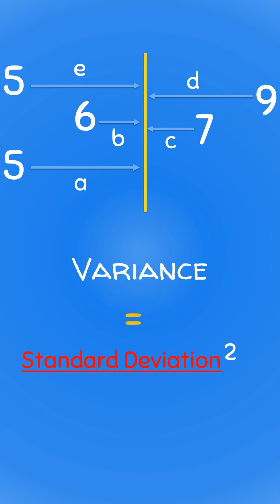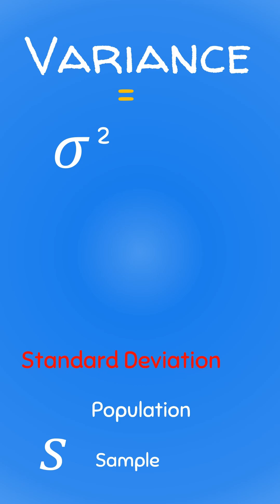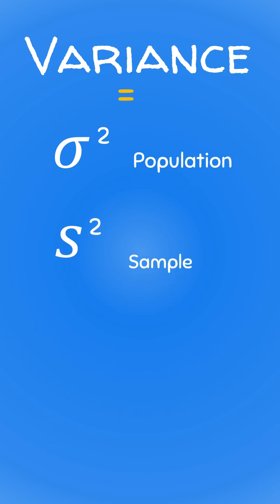And because the standard deviation is represented by the Greek letter sigma for the population standard deviation or the Latin letter s for the sample standard deviation, the variance is then also represented as sigma squared for the population and s squared for the sample.